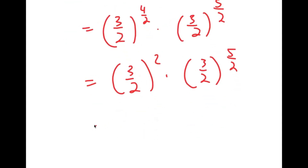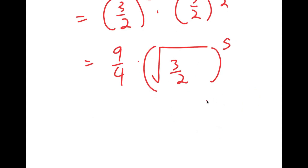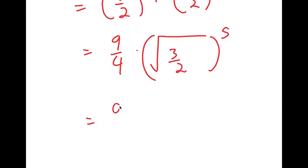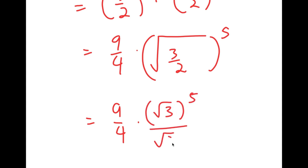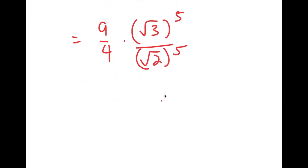So I get 3 over 2 to the power of 2 times 3 over 2 to the power of 5 over 2. And 3 over 2 squared is equal to 9 over 4. So I get 9 over 4 times 3 over 2 to the power of 5 over 2, which is the same thing as the square root of 3 over 2 to the power of 5. The square root of 3 to the power of 5 is equal to 9 root 3, which you can get by multiplying the square root of 3 five times.